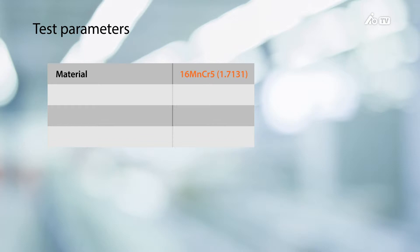Out of the many trials that we conducted, I'd like to present one in detail on 16-Mancro 5, an alloyed case hardening steel. The cutting speed during our test was 325 meters per minute, at a feed of 0.35 millimeters and a cutting depth of 2.1 millimeters.